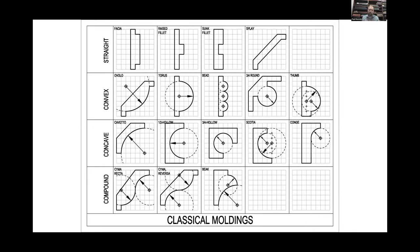This is the alphabet we're drawing together: 17 different profiles that can be combined and manipulated by an experienced designer. Moldings are organized here by morphology or shape. When we walk down the molding aisle in Home Depot it can feel intimidating, but it's quite simple. Moldings are either straight, convex, concave, or compound. For straight moldings: the fascia, the fillet — raised or sunk — and the splay. For convex: the ovolo, torus, bead, three-quarter round, and thumb. Concave: the covetto, half hollow, three-quarter hollow, scotia, and congé. Compound: the cyma recta, cyma reversa, and the beak.